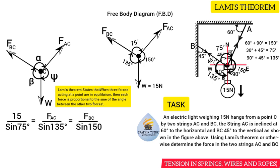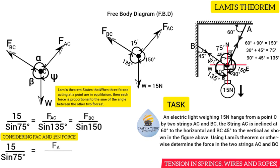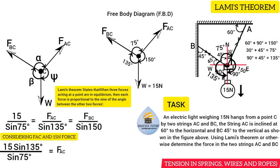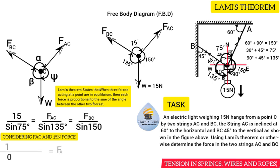I cannot take FAC and FBC together because we have two unknowns; I will take one known and one unknown at a time. Taking 15 over sine(75°) equals FAC over sine(135°): making FAC the subject, FAC equals 15 times sine(135°) all over sine(75°). Since 15 times sine(135°) equals 10.607 and sine(75°) equals 0.966, dividing gives FAC equals 10.98 Newton.